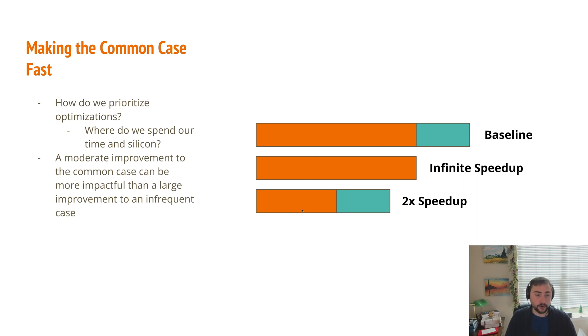we can see that we get more of an overall speedup from a 2x improvement to the execution time of the orange section than an infinite speedup of the teal section. So even though we're only getting 2x on the orange section compared to infinite speedup of the teal section, our overall execution time is a lot better in this bottom case here, because we're focusing on whatever the common case is, the part of our program or the operations that are taking the longest.